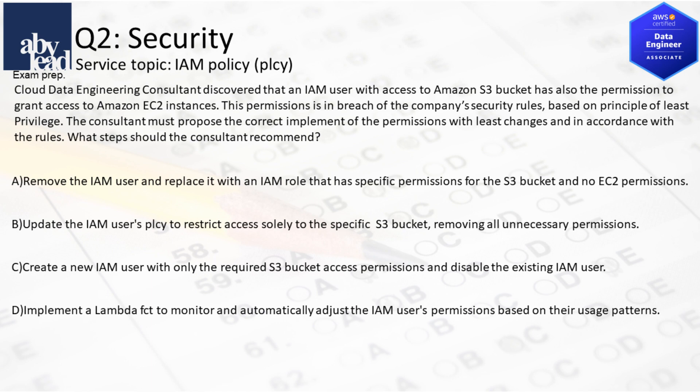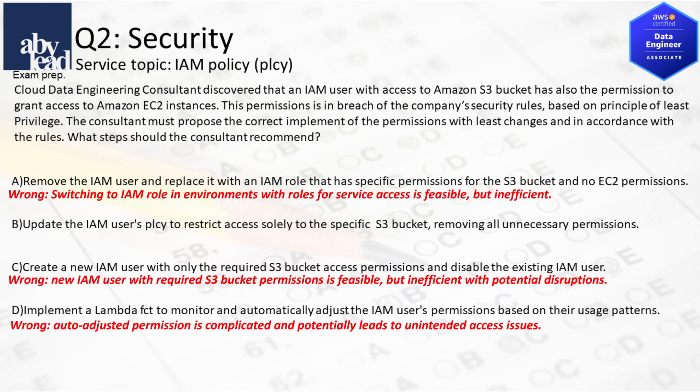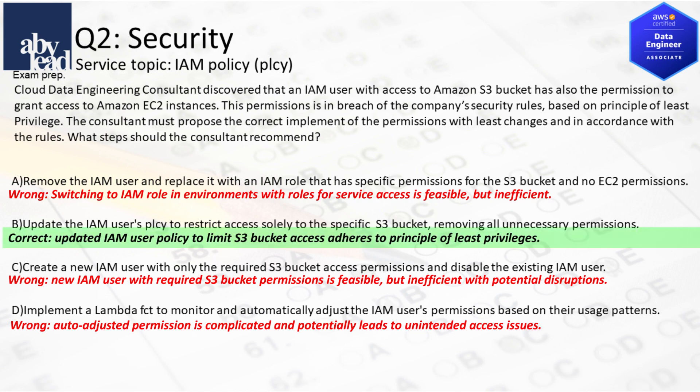Question 2: How do you most efficiently separate IAM user permission granting from its S3 access permission? Using a new IAM user is inefficient with potential disruptions, and auto-adjusted permissions lead to unintended access issues. Switching to an IAM role in environments with roles for service access is also inefficient. In contrast, updating the IAM user policy to limit S3 bucket access adheres to the principle of least privileges.